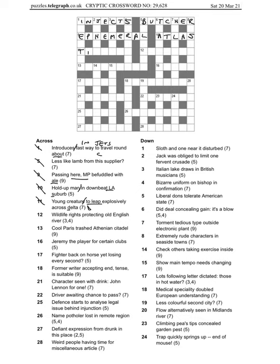12 across: wildlife rights protecting old English River. So right, two Rs for rights protecting, going around, OE for English, and the river is going to be the river D, gives us RODEA for this particular type of wildlife. 13 across: cool Paris trashed, an anagram of cool Paris giving us an Athenian citadel, that is the ACROPOLIS.